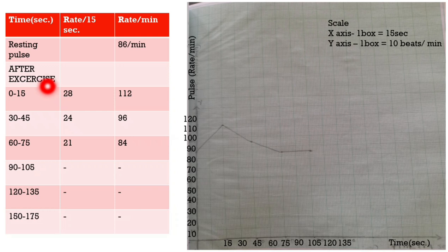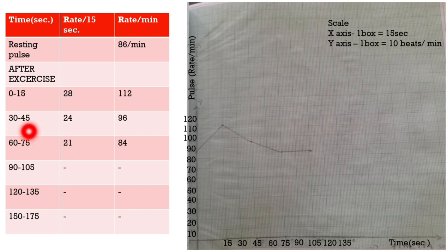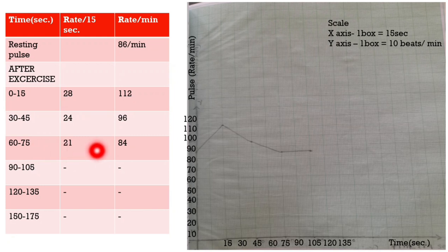Initially, the resting pulse rate was calculated and found to be 86 per minute. The subject was asked to do exercise, and immediately after completion, we started counting the pulse. At the end of the 15th second, the pulse rate was found to be 28 per 15 seconds. The subject rested, and from the 30th to the 45th second, the pulse was 24 per 15 seconds. From the 60th to the 75th second, the rate was 21 per 15 seconds. Each value was multiplied by 4. We found it had reached just below the resting pulse rate at the end of 75 seconds, so we stopped the procedure.